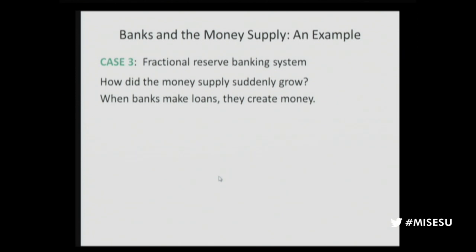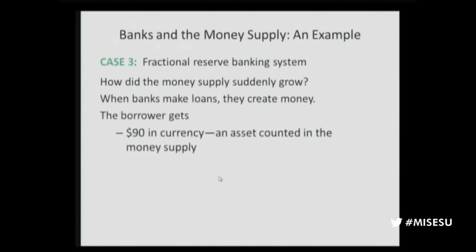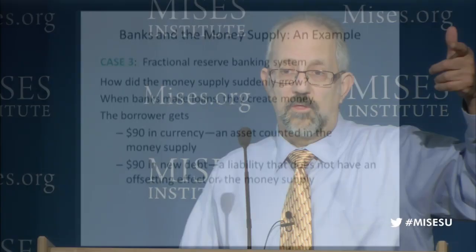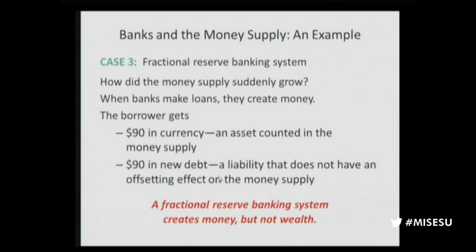So when banks make loans, they create money — that's a key insight. All economists, Keynesian to Austrian, accept this. The borrower gets $90 in currency — an asset counted in the money supply — but also gets $90 in debt. So there's no new financial wealth: you have $90 more but you owe the bank $90. However, there is an increase in the money supply. Fractional reserve banking creates money, but not wealth.